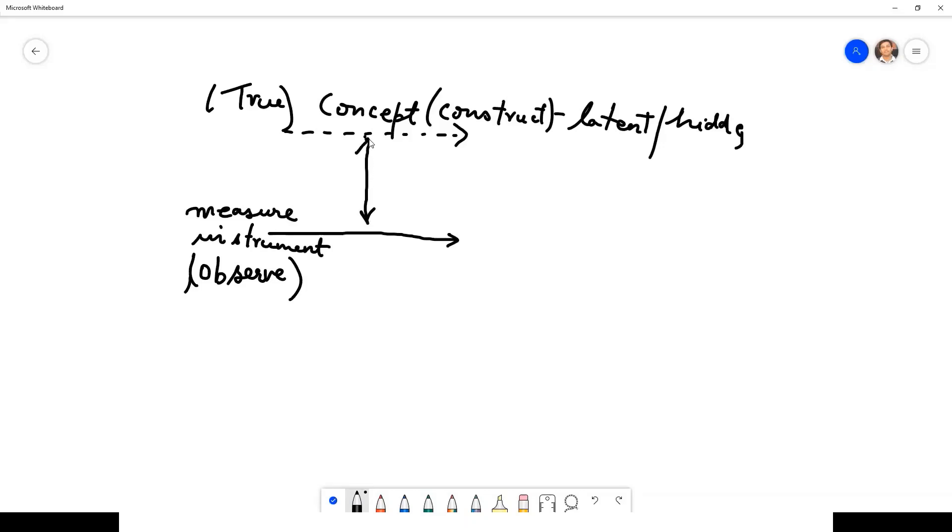This difference that we have is what we call as measurement error. This is the error of measurement that has come in through the scale that we have created, and all our efforts.